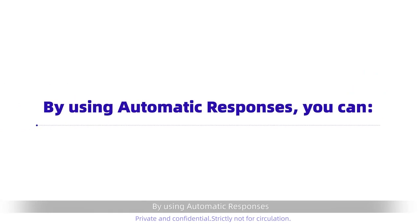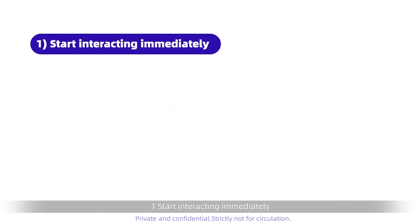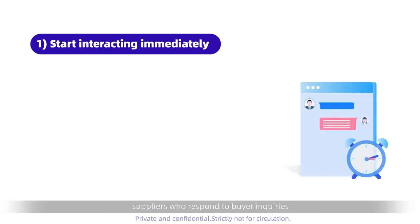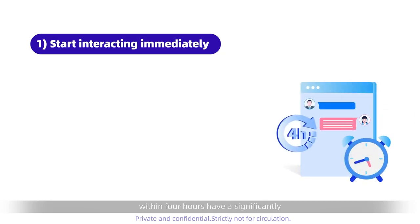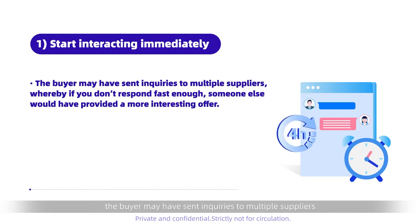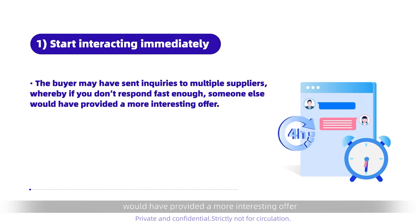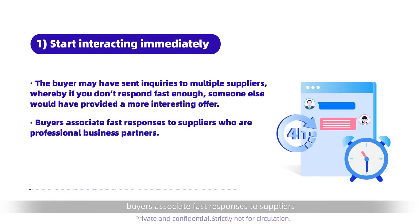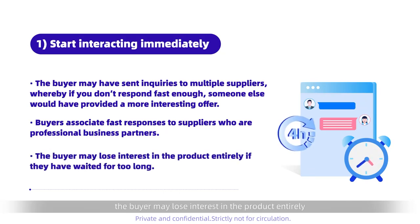By using automatic responses, you can: 1. Start interacting immediately. According to Alibaba.com data, suppliers who respond to buyer inquiries within 4 hours have a significantly higher chance of converting leads. This is true for several reasons. First, the buyer may have sent inquiries to multiple suppliers, whereby if you don't respond fast enough, someone else would have provided a more interesting offer. Second, buyers associate fast responses to suppliers who are professional business partners. Finally, the buyer may lose interest in the product entirely if they have waited for too long.